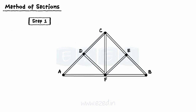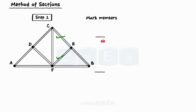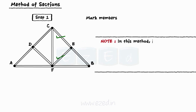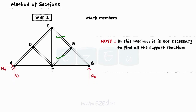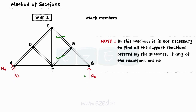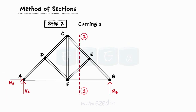The following steps are followed while analyzing a truss using method of sections. First, mark the members which have to be analyzed — prefer using a tick mark. Kindly note that in this method it is not necessary to find all the support reactions offered by the supports. If any of the reactions are required, we calculate them at the start itself. Then draw a section cutting through the marked members, not necessarily through all the marked members, such that no more than three unknown members are cut.